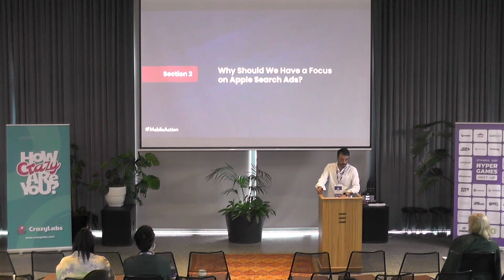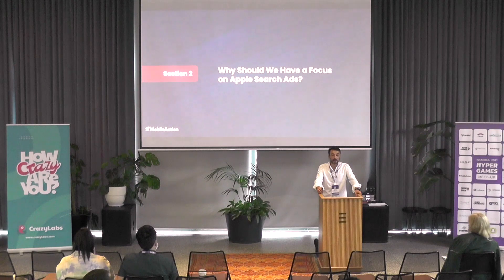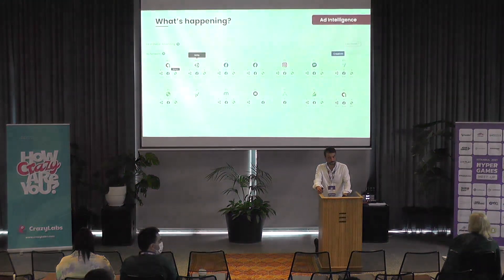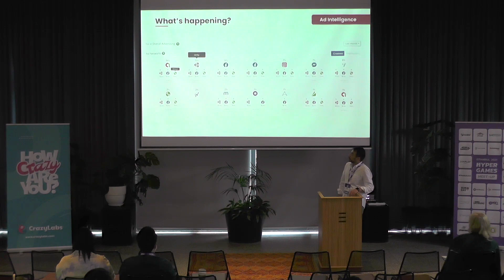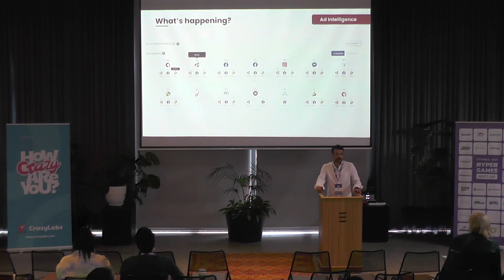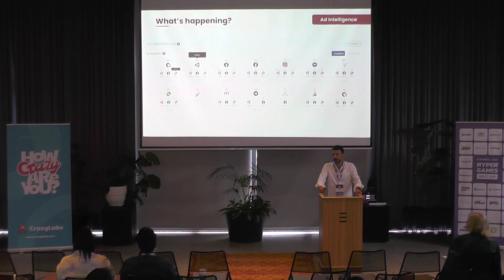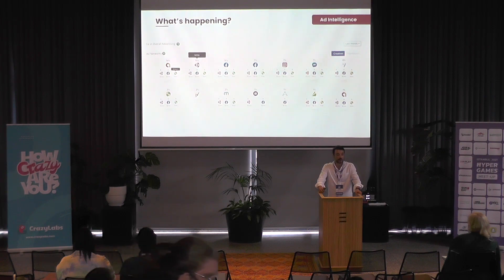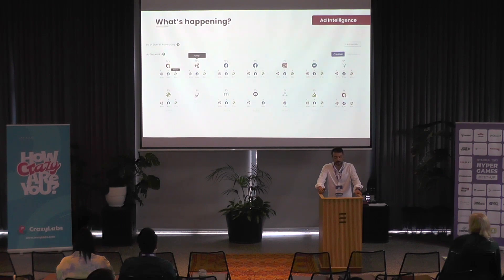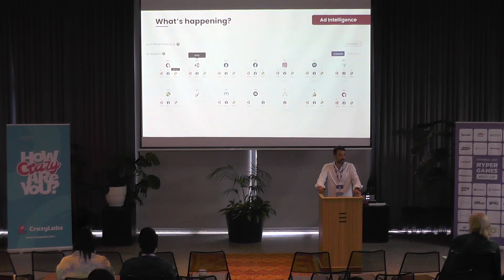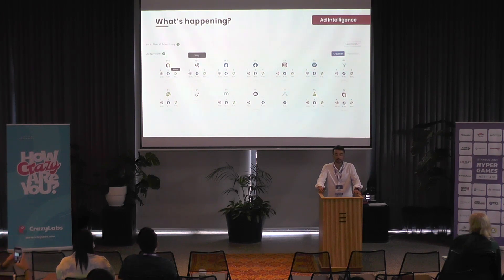So the first part: why should we focus on Apple Search Ads? I brought this screenshot from Mobile Action's Ad Intelligence platform. This is a hyper-casual game I randomly picked, and you can see all of their UA activities across different ad networks. This game is putting their efforts on 34% AdMob, Unity, Facebook, and other DSP distributions. This complexity tells me that hyper-casuals are very focused on UA — that's how they make money.